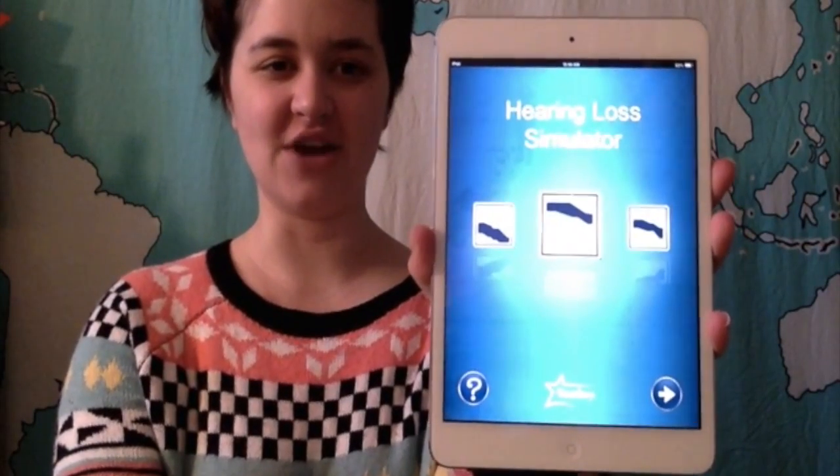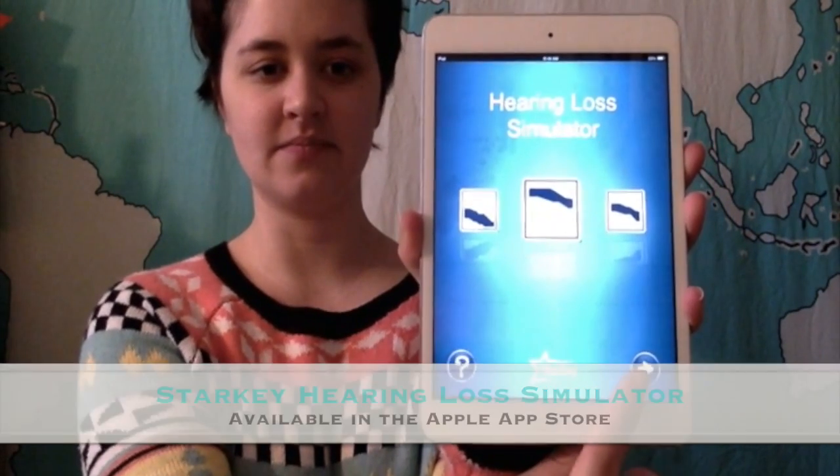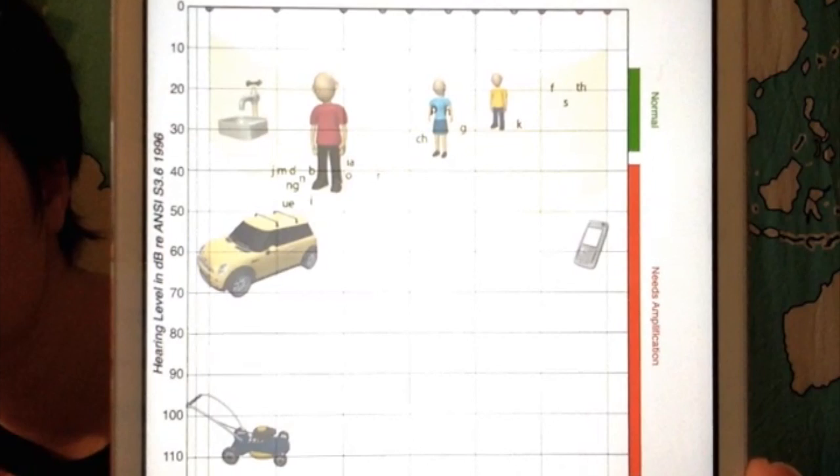One tool that I've found for help understanding audiograms is the Starkey Hearing Loss Simulator. Not only does the Starkey Hearing Loss Simulator provide canned sounds that you can test a particular hearing loss with, you can also record your own sounds and see what they would sound like.